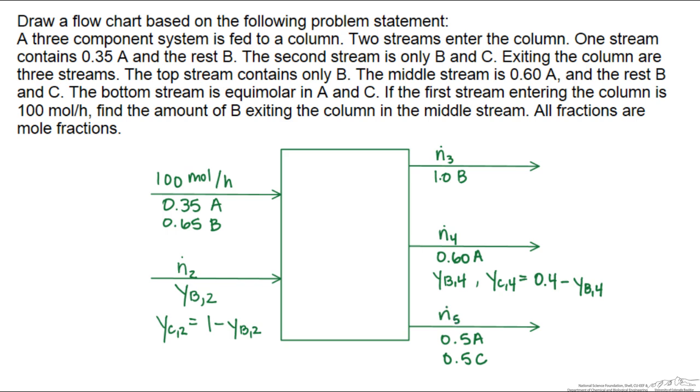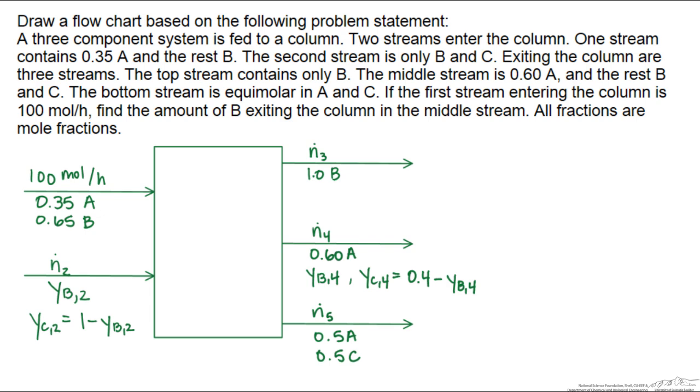And note that I put dots over the N, that's because they are flow rates. And now we want to find the amount of B exiting the column in the middle stream. So let's take a look what it is that we are actually looking for here. The amount of B, so that is the mole fraction of B times the flow rate, is actually equal to the flow rate of B in stream 4.